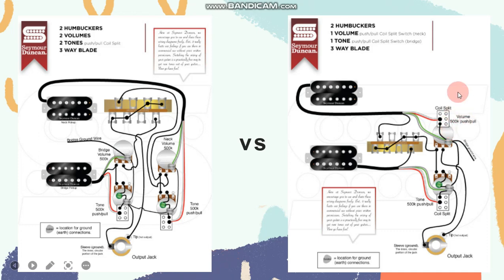The difference in the two circuits is a function to change the pickup settings. In the first circuit, the settings serve to increase the intonation and volume on the guitar. This is usually used when the guitarist wants to play low-pitch types of songs, such as jazz, blues, reggae, and similar genres.